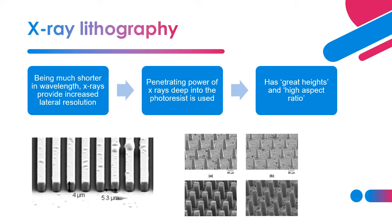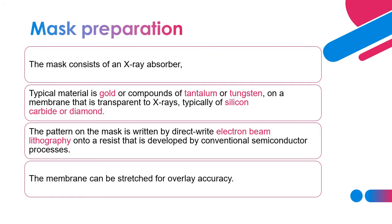The picture below shows examples of products produced through X-ray lithography. The mask for X-ray lithography consists of an X-ray absorber. Usually the material is gold or a compound of tantalum or tungsten, placed on a membrane that is transparent to X-ray — typically silicon carbide or diamond. The pattern on the mask is written by direct write from electron beam lithography. So the mask for X-ray lithography is itself produced using electron beam lithography, going a level higher for the mask to be produced.